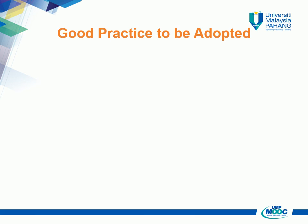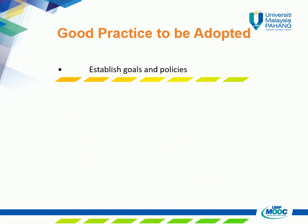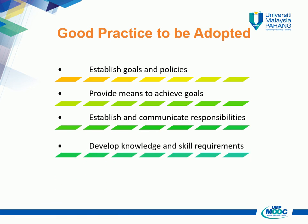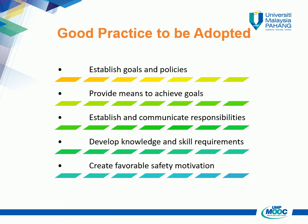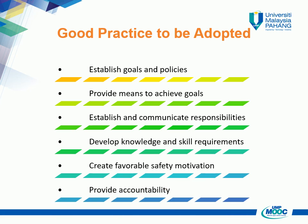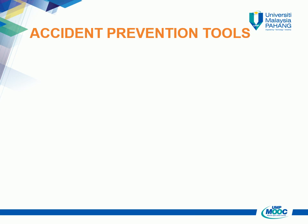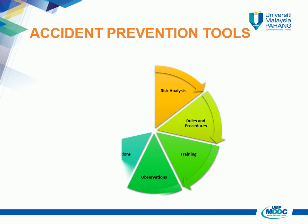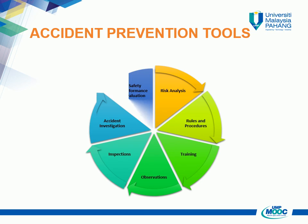Several good practices can be adopted at the workplace to prevent accidents: establish goals and policies, provide means to achieve goals, establish and communicate responsibilities, develop knowledge and skill requirements, create favourable safety motivation, and provide accountability. We also need to establish accident prevention tools such as risk analysis, rules and procedures, training, observations, inspections, accident investigation, and safety performance evaluation.